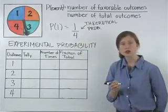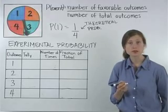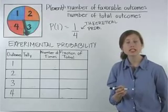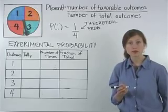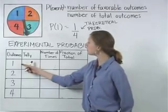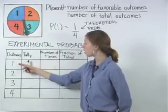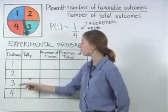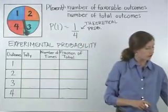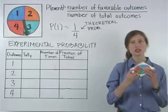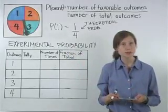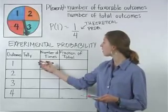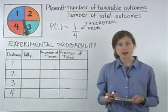We can find the probability of spinning a one by spinning a spinner a number of times and finding how many times we spin one. Notice that the possible outcomes of spinning a spinner are one, two, three, and four. So if we make our own spinner similar to the one shown here, we can spin the spinner a number of times and find the number of times that we spin each possible outcome. Let's try it now.